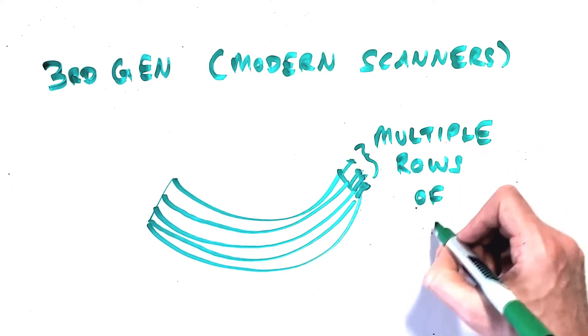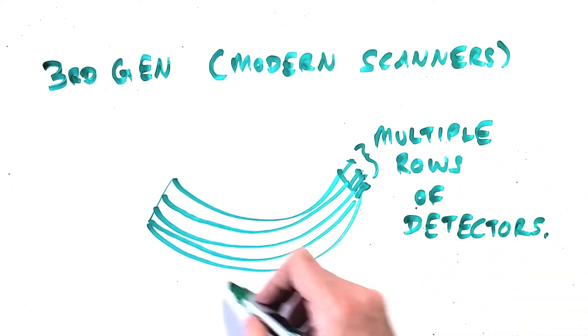This type of system is referred to as a third generation scanner and is the most common type of CT scanner we use today.